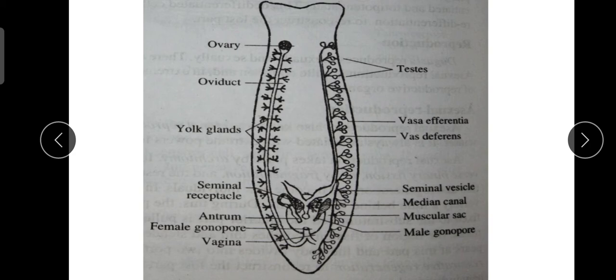Cross-copulation and cross-fertilization is the rule in Dugesia. During copulation, two individuals come into close pairing, bringing their posterior ventral parts and gonopores into close position. Copulation and insemination are reciprocal — each copulant inserts its cirrus into the genital atrium of the other, and sperm is transferred to the seminal receptacle.